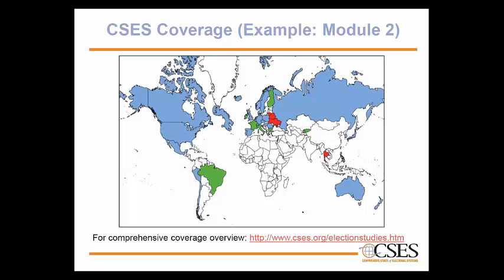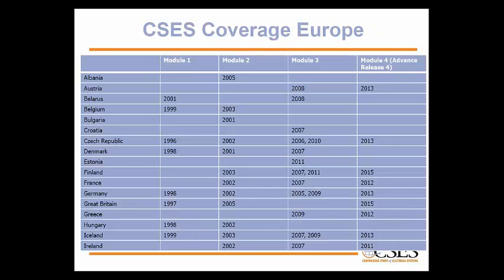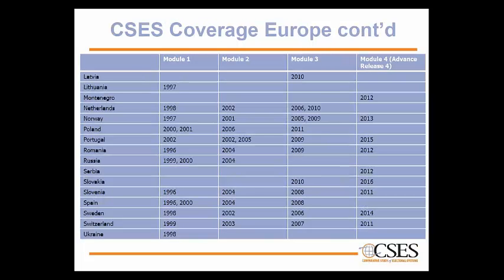A world map illustrates the geographic coverage of Module 2: most of the Western world is covered, along with Russia, parts of Latin America, and some Asian countries, though Africa and the Middle East are underrepresented — though from this year the first African country, Kenya, has been included. For those focused on Europe, a table shows coverage across modules in European countries, available on the CSES website. Note that countries are differently represented: some participate consistently, others only occasionally.